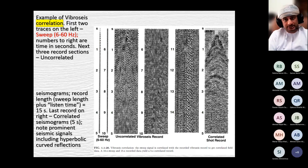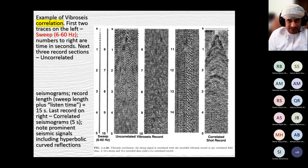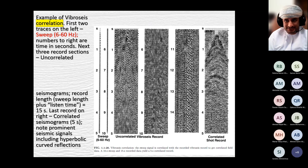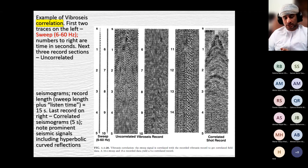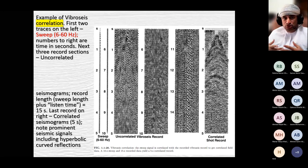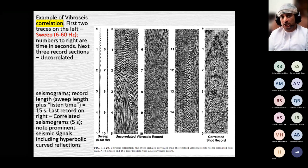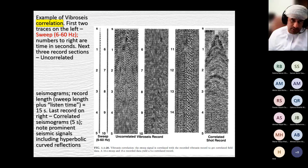Recording seismic data with the Vibroseis poses challenges because the signal sent by the Vibroseis is not a sharp, sudden signal — it has time duration. It's a sweep signal, a long period of vibrations. So the initially recorded data is not useful; it's in a format that cannot be used for interpretation or processing. Thus we apply a process called correlation.